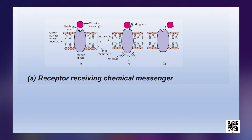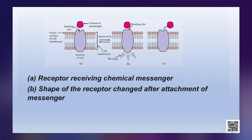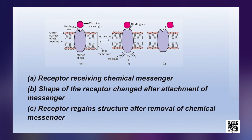As shown in the picture: figure (a) shows the receptor receiving the chemical messenger; figure (b) shows the shape of the receptor changing after it receives the message; and figure (c) shows the receptor regaining its structure after the messenger is removed.